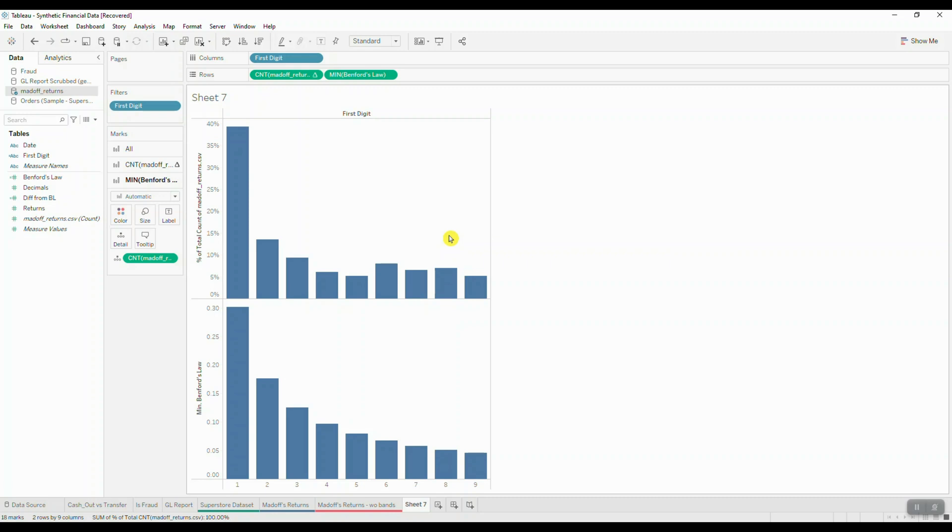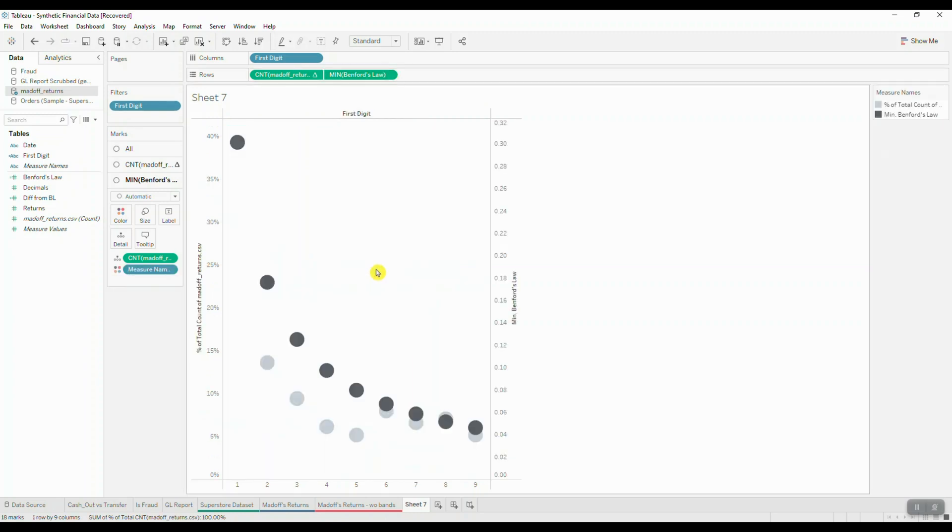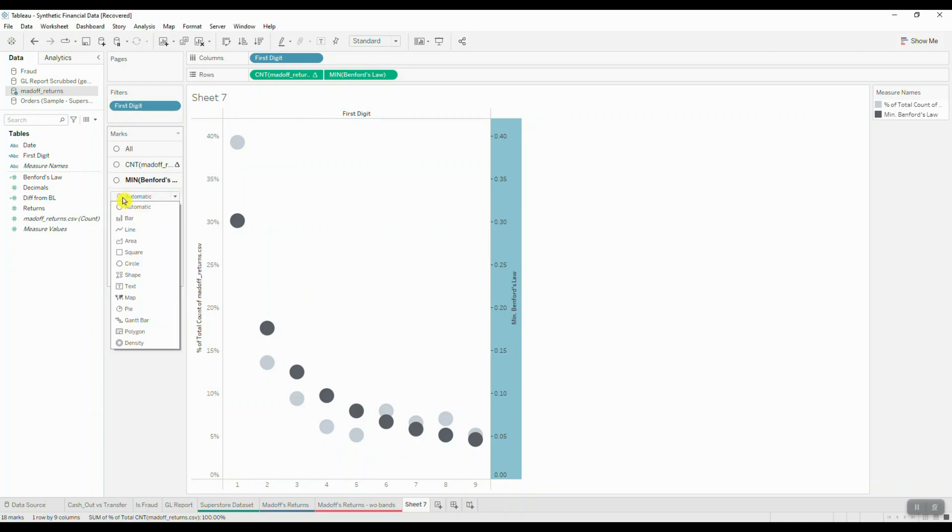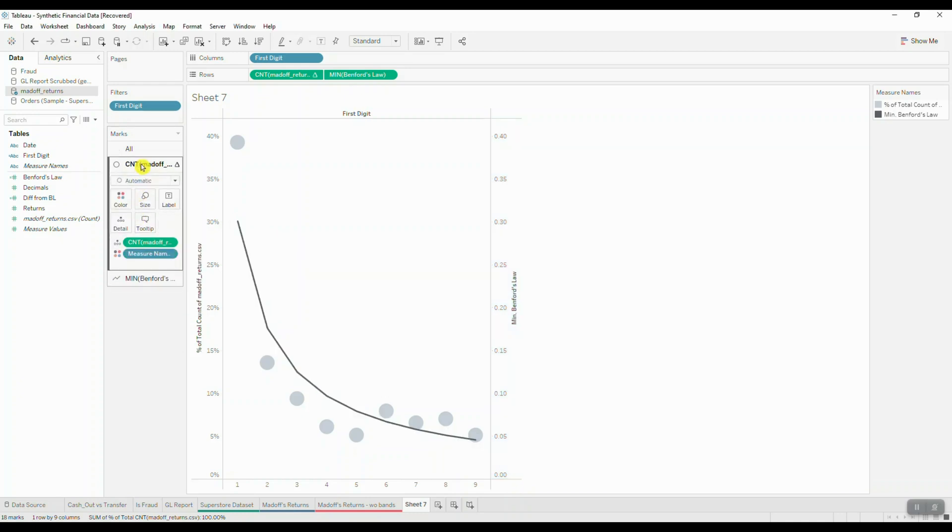Next I want to create a dual axis chart to combine both of these visualizations together. We'll click on the drop down menu for Benford's law and choose dual axis. We're going to synchronize our axes, so right click synchronize axis, and then change our mark types for both measures. For Benford's law we're going to choose a line, and for our total count of records we're going to choose a bar.